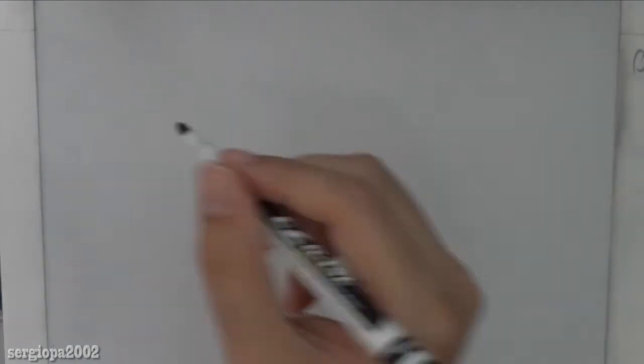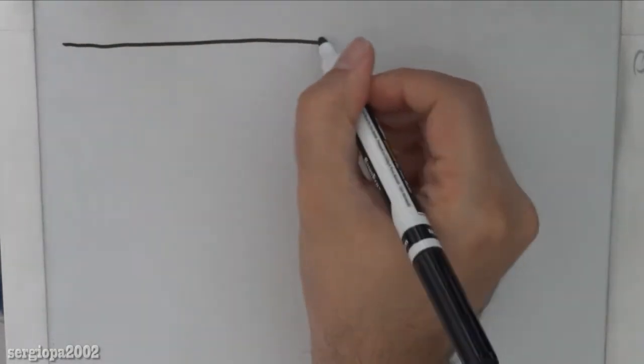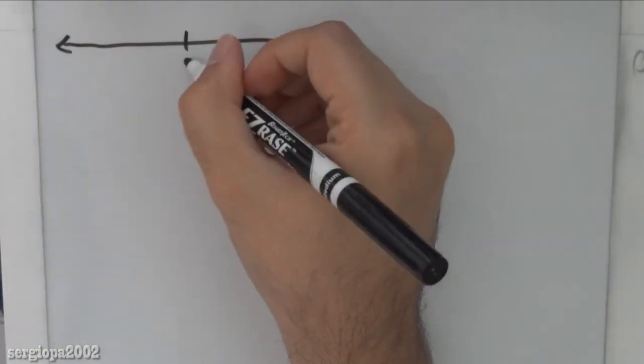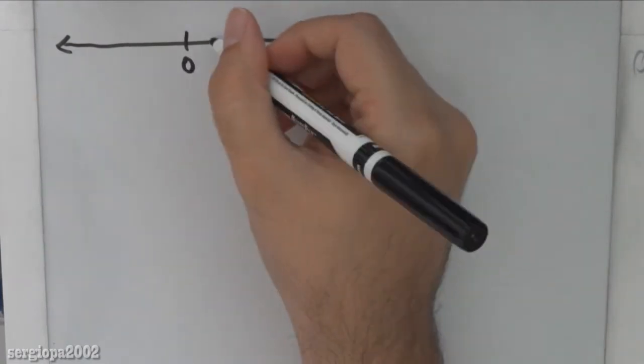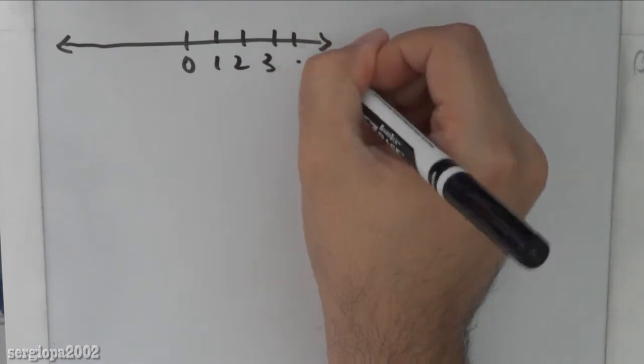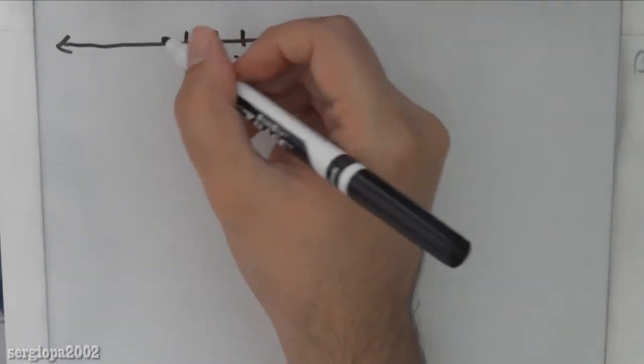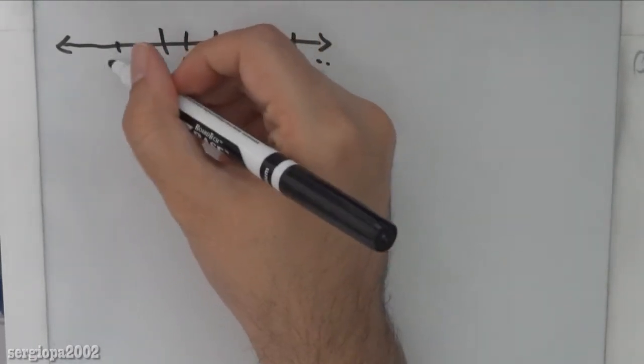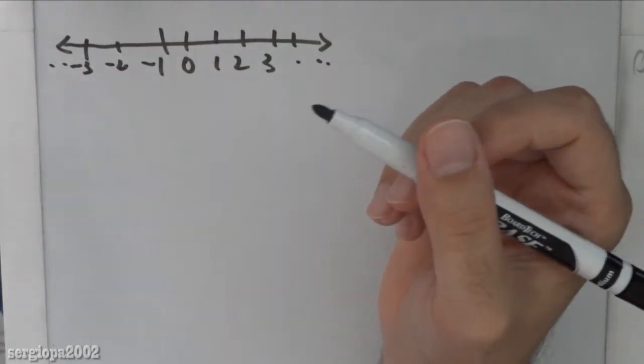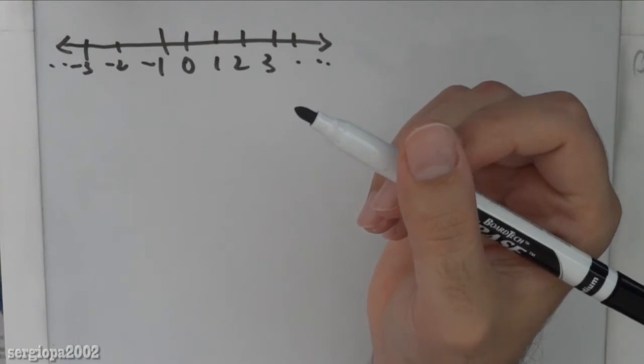So real numbers are nothing more than the numbers that we have on a straight line, and starting here from 0, all the numbers that are on the right are positive 1, 2, 3, etc., and the ones on the left of the 0 are negative: minus 1, minus 2, minus 3, etc. Those are called the real numbers.